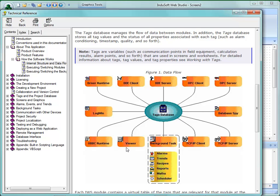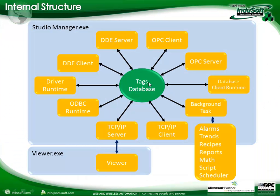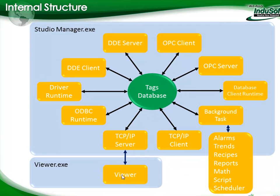I'm going to flip over to a PowerPoint slide with the updated version. Here we see the tags database is again the central core, but the viewer — instead of being its own task or thread — is now part of the TCP/IP server. That changed prior to version 7.0, but we're just updating the chart. You should see this in the version 7.1 documentation. In addition, background tasks and alarms are off of here, and you can see all the different ways information can get into and out of tags.